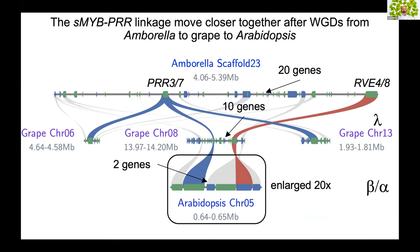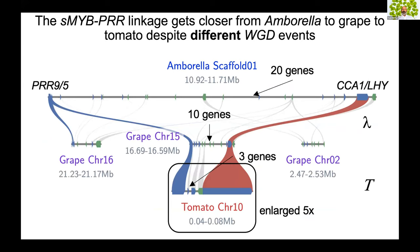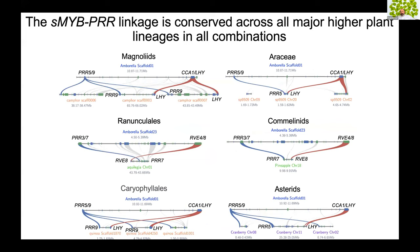Looking at grape, which only has the lambda whole genome triplication, we found that both linkages between PRR9 and LHY, and PRR7 and RVE, are retained in the grape lineage, though they are several genes apart. In contrast to Arabidopsis, over evolutionary time these genes are coming closer and closer together. In Arabidopsis they are only several genes apart. This raised the question: could this be randomly happening every once in a while, or is there selection for this linkage?